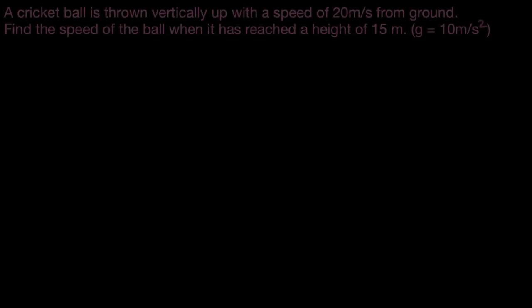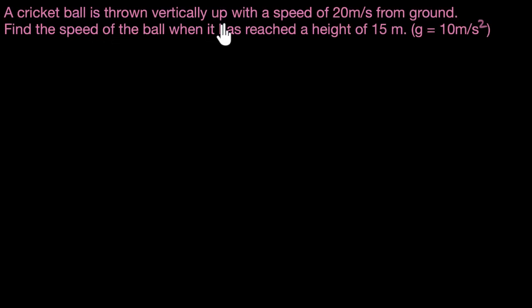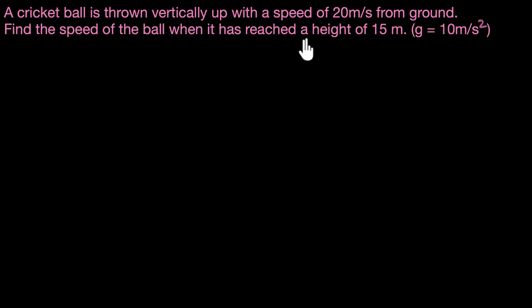Let's use energy conservation to solve a couple of problems. Here's the first one: a cricket ball is thrown vertically up with a speed of 20 meters per second from the ground. Find the speed of the ball when it has reached a height of 15 meters. Given g is 10 meters per second squared.